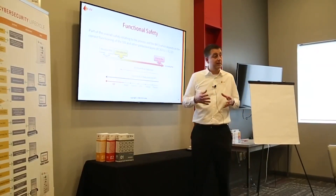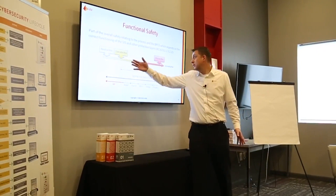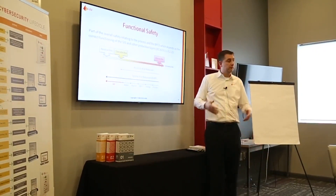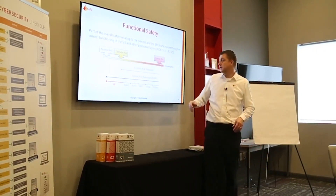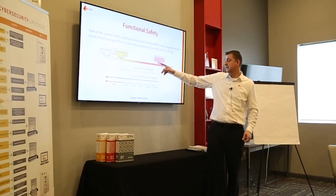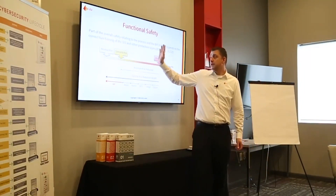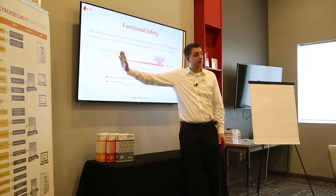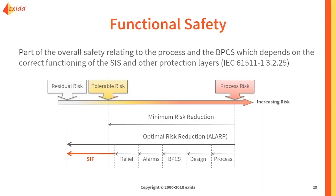With your process, there is a certain level of risk or hazards, and there's a certain level of risk associated with that hazard. That risk may be greater than what you can tolerate. So if that process risk is greater than your tolerable risk, you need risk reduction. A minimum level of risk reduction will be to just hit that tolerable risk level.